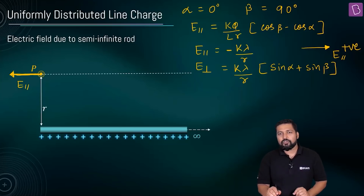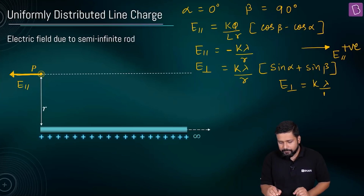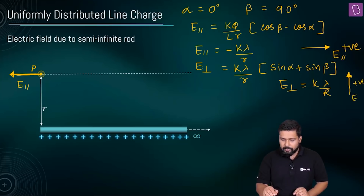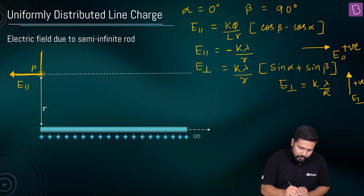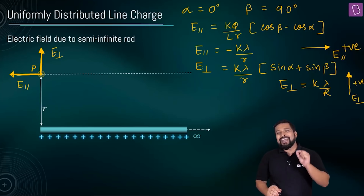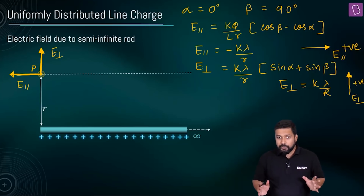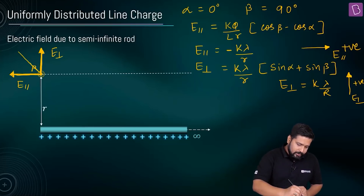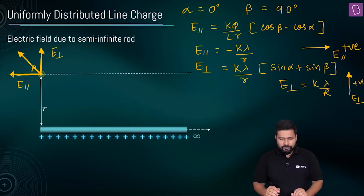Since beta is 90 degrees, sin(90°) equals 1, so E_perpendicular equals kλ/r. The perpendicular component is positive, meaning it points in the outward perpendicular direction. Both components — E_parallel and E_perpendicular — are now determined. As you can see, in terms of magnitude they are equal, so the net electric field direction will be at 45 degrees between the two components.